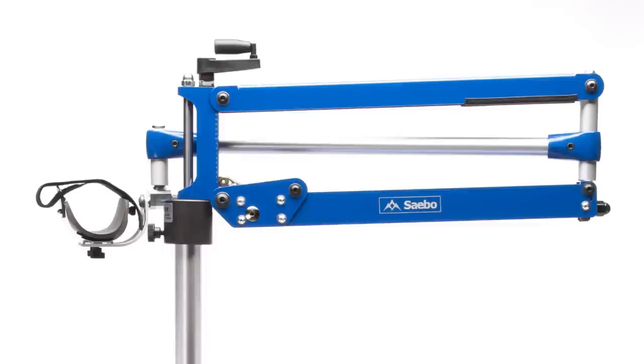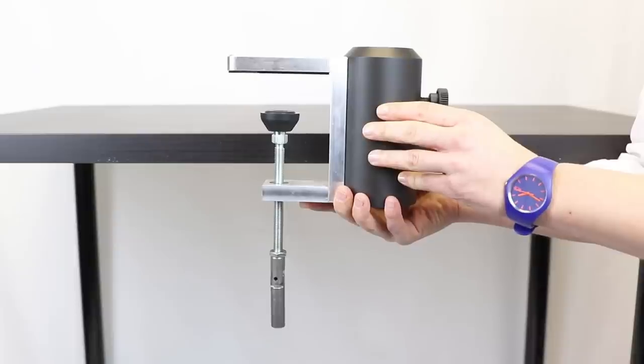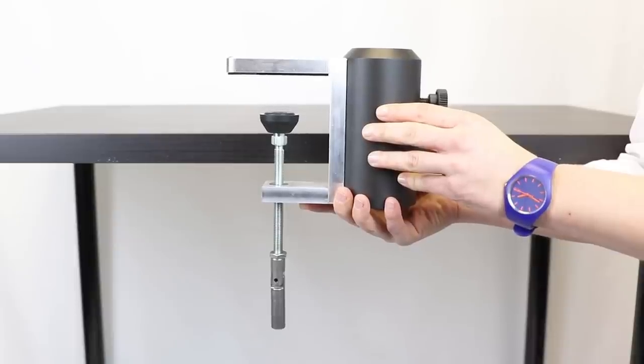During this tutorial I will be demonstrating how to set up and use the Sabo mobile arm support. Firstly I'm going to show you the table mount option and how to attach it.